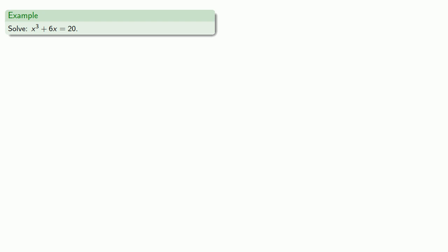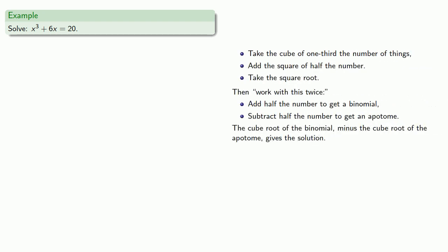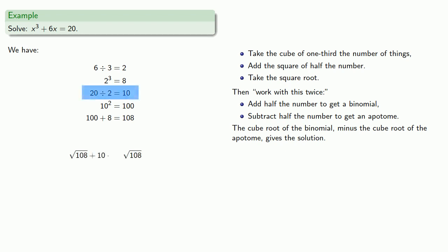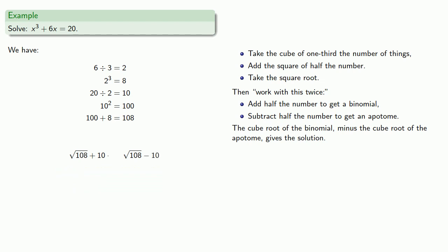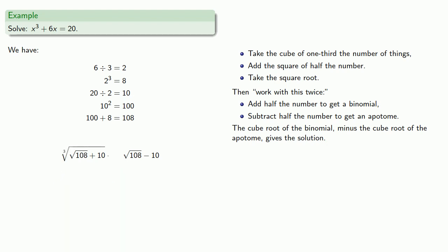Going back to our first cubic, x³ + 6x = 20. We take the cube of one-third the number of things: there are 6 things, one-third is 2, and the cube is 8. Then we add the square of half the number: the number is 20, half is 10, squared is 100. We add to get 108, take the square root, and work with it twice. We add half the number to get the binomial: √108 + 10. We subtract half the number to get the apotome: √108 - 10. The cube root of the binomial minus the cube root of the apotome gives the solution.